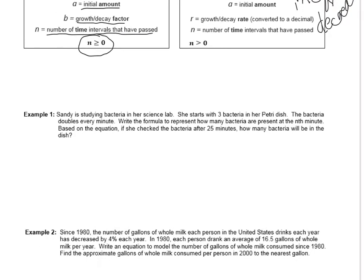In this first example, it says Sandy is studying bacteria in her science lab. She starts with three bacteria in her petri dish, so there's your A number. The bacteria doubles every minute. When you're doubling a quantity, you are multiplying by two, so there's your B number. Write the formula to represent how many bacteria are present in the nth minute. So that means just write the formula, raise it to the n power.